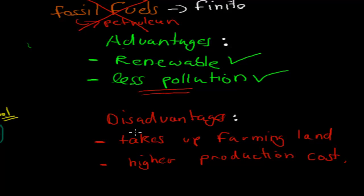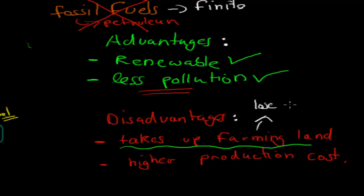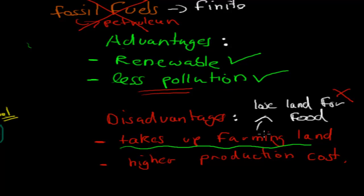However, there are disadvantages. If we have to grow more and more cellulose — like growing plants — that takes up farming land. By taking up farming land, we lose land that we could use for food, and we already have a crisis where we don't have enough land. Using more land for petrochemical production means less land for food, which means more starving people.